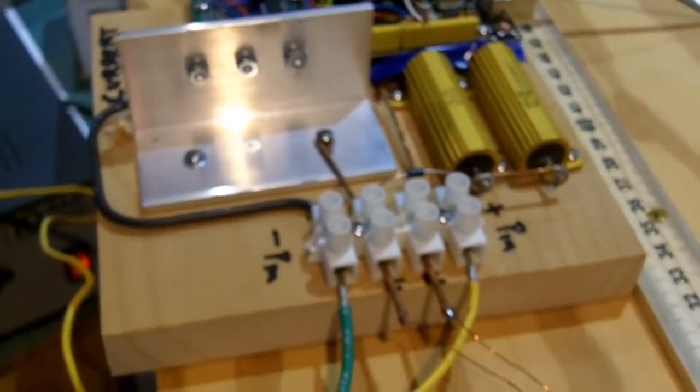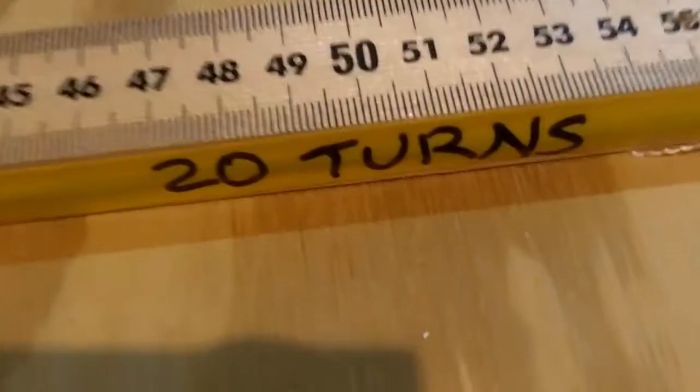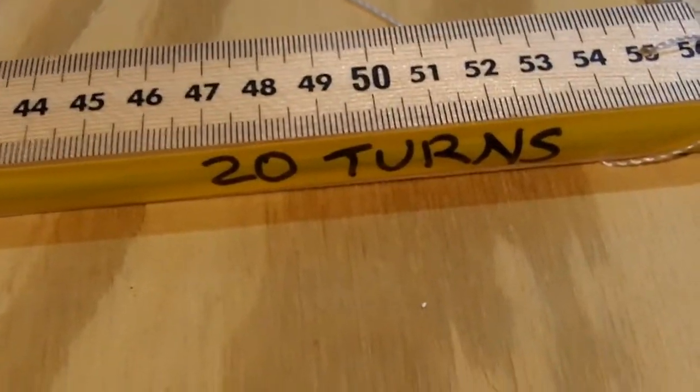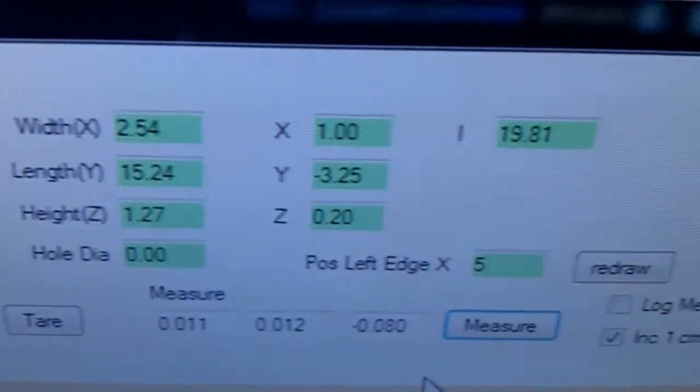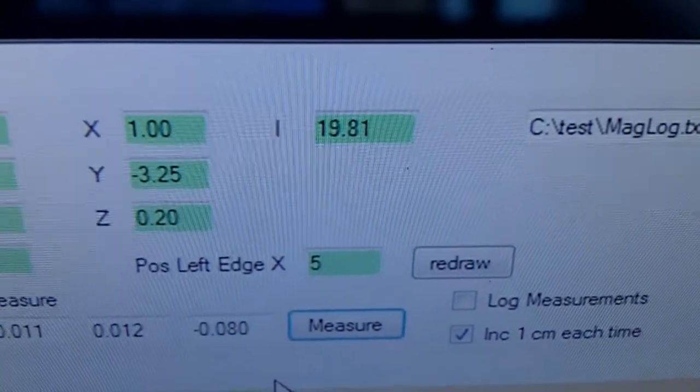It's pumping one amp into it, so that should give me effectively 20 amps because there's 20 turns. I punched all the values into the magnetic field tool, and you can see that the measured current is 20 amps.